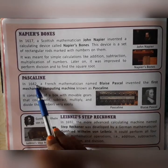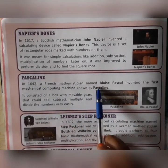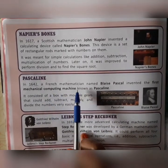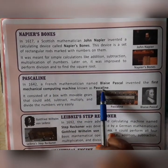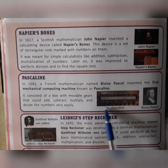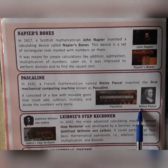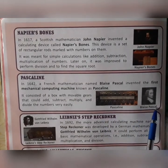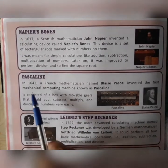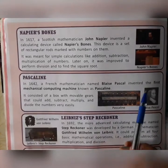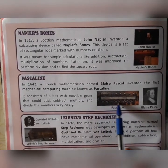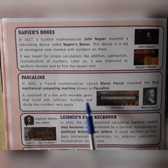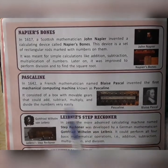In 1642, a French mathematician named Blaise Pascal invented the first mechanical computing machine known as Pascaline. You can see the device Pascaline here — it consists of a box with movable gears which could add, subtract, multiply and divide numbers very easily.